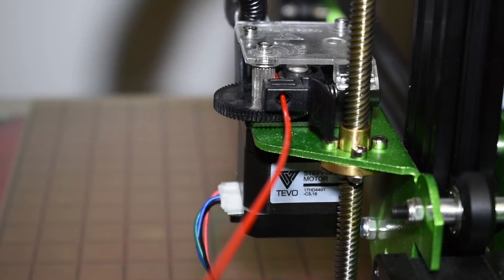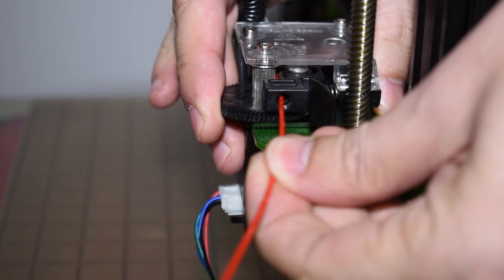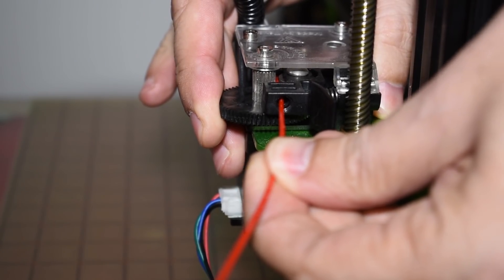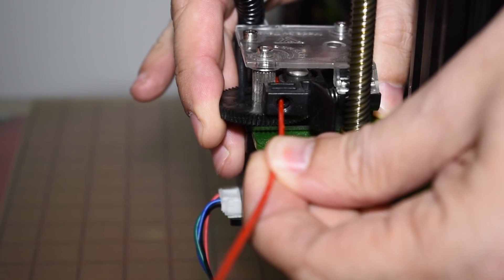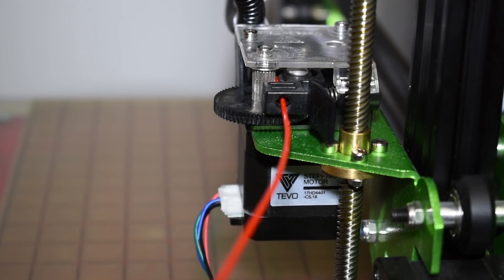In the meantime, hold the big geared wheel with your finger and try to pull the filament out. Don't pull it too hard, just enough to check that the filament is secure and the gears are keeping the filament from moving. If not, then you need to increase the tension.